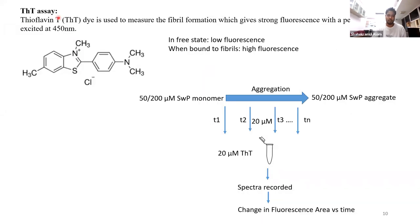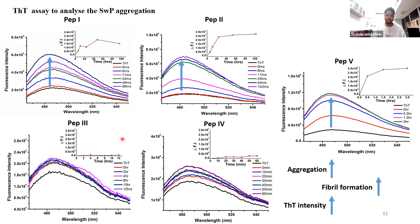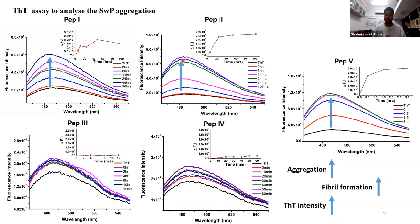We also did the Thioflavin T (THT) assay, which is characteristic for fibril formation. Its fluorescence is around 490 nm when excited at 450 nm; in free state it gives very low fluorescence, but when bound to fibrils it gives high fluorescence. For the five peptides, as aggregation kinetics proceeded, there was an increase in THT absorbance suggesting fibril formation, although in some of the non-acetylated peptides there wasn't much THT increase, suggesting THT detected changes only in cases of actual fibril formation.